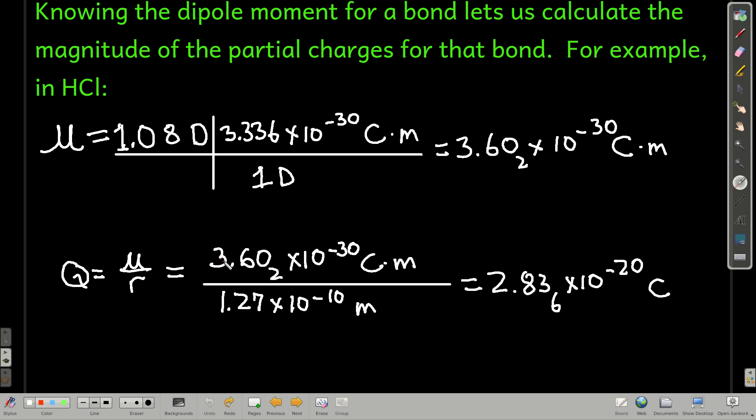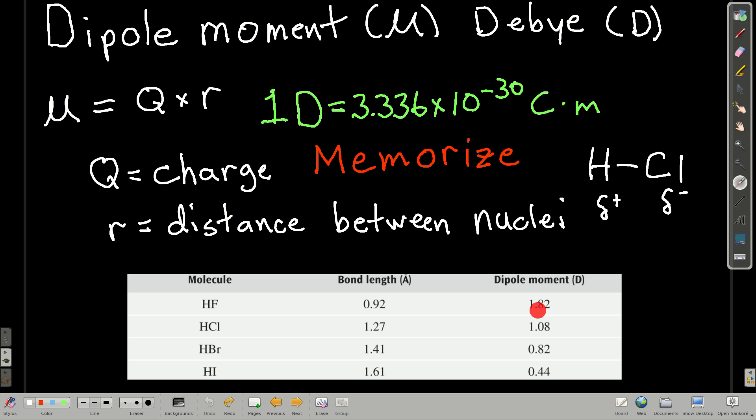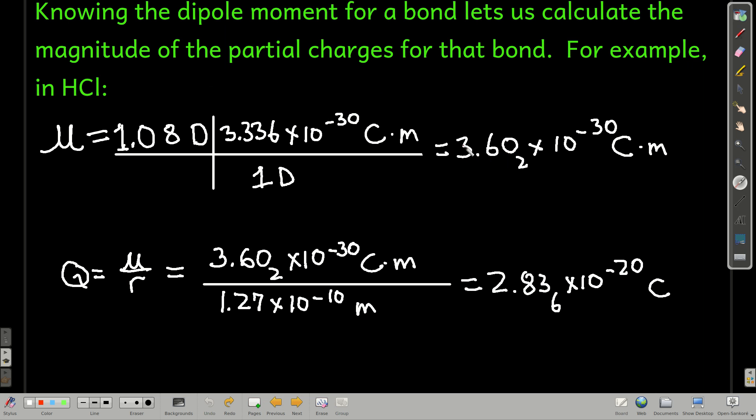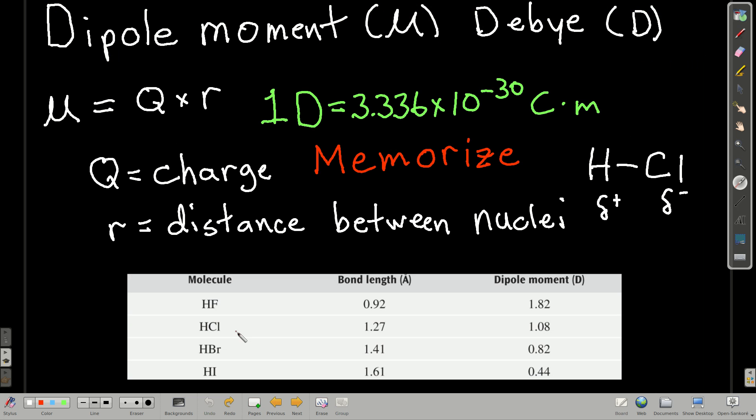So one of the useful things about knowing the measured dipole moment, going back here for a second, these dipole moments here were measured experimentally. That's where we got those numbers from. So if we know that number, we can calculate how big the partial charges are in that molecule, that delta plus and that delta minus. For example, in hydrogen chloride, and we're talking about gaseous species here because once you put it in water, then stuff gets a little more complicated. So going back, this number here, 1.0 Debye's, this is the dipole moment for hydrogen chloride, and we're going to need the bond length of 1.27 angstroms.